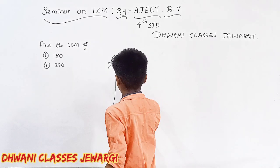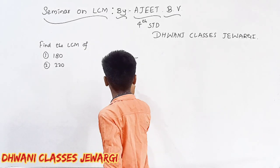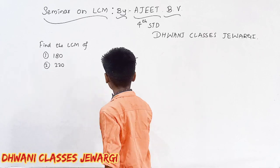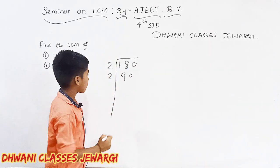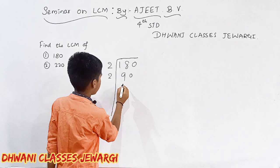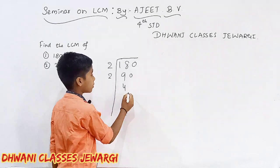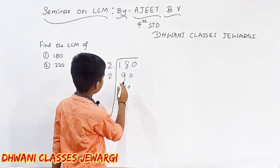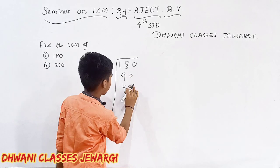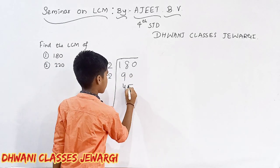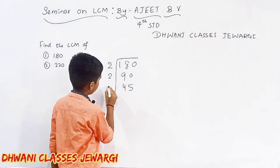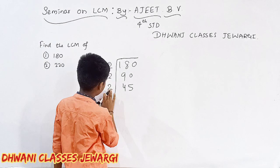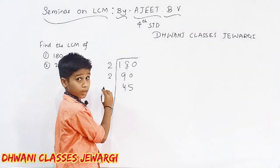2 nines are 18, 0 as it is. 2 fours are 8, 0 as it is. 2 fours are 8. 2 fives are 10. 2 threes. 3.